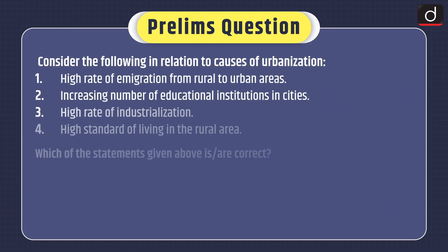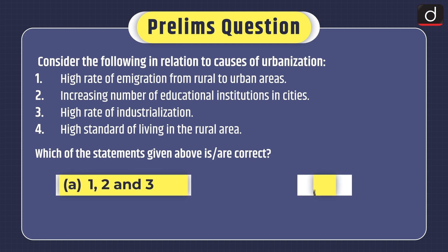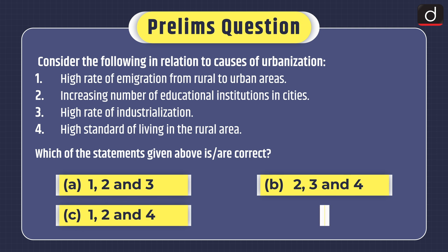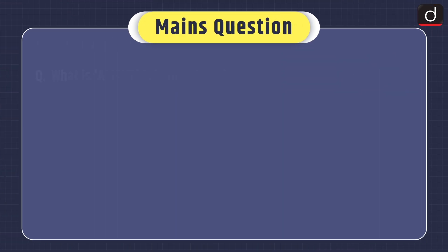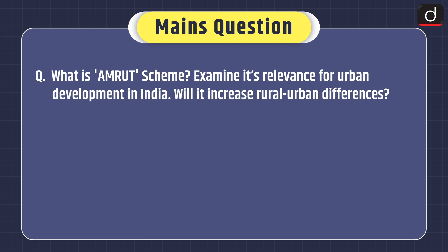Now it's time for practice questions. Prelims question: Consider the following in relation to causes of urbanization — 1. High rate of emigration from rural to urban areas; 2. Increasing number of educational institutions in cities; 3. High rate of industrialization; 4. High standard of living in the rural area. Which of the above statements is or are correct? Options: 1, 2 and 3; 2, 3 and 4; 1, 2 and 4; or 1, 3 and 4. Mains question: What is the AMRUT scheme? Examine its relevance for urban development in India. Will it increase rural-urban differences?